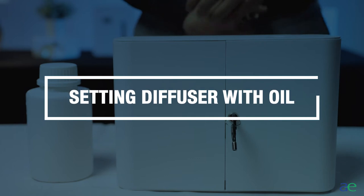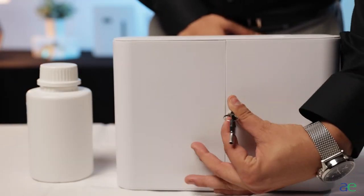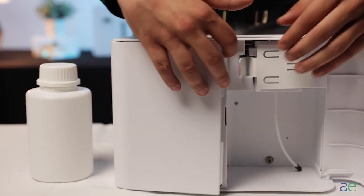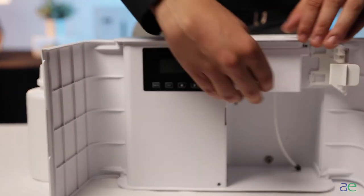Setting up your diffuser with oil. Use the key to unlock the device and open the door. Swing open the bracket and remove the atomizer.